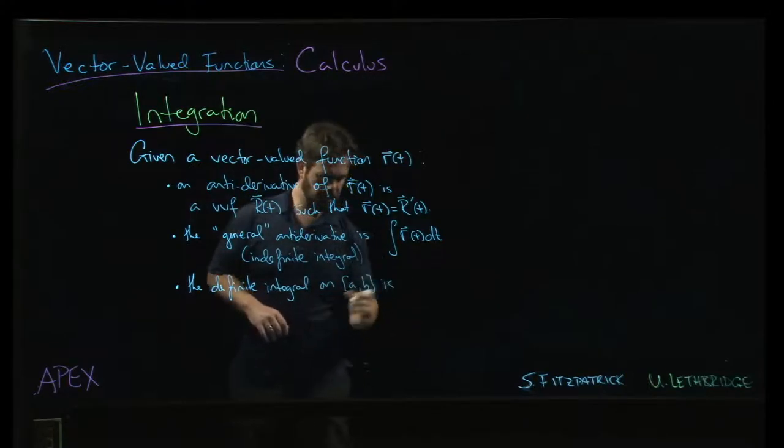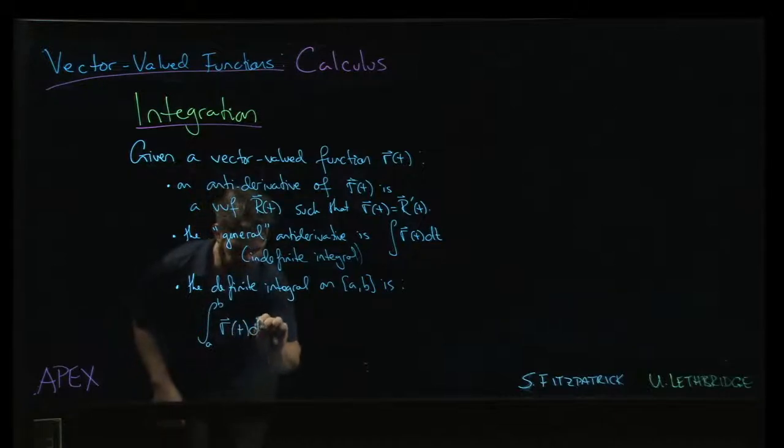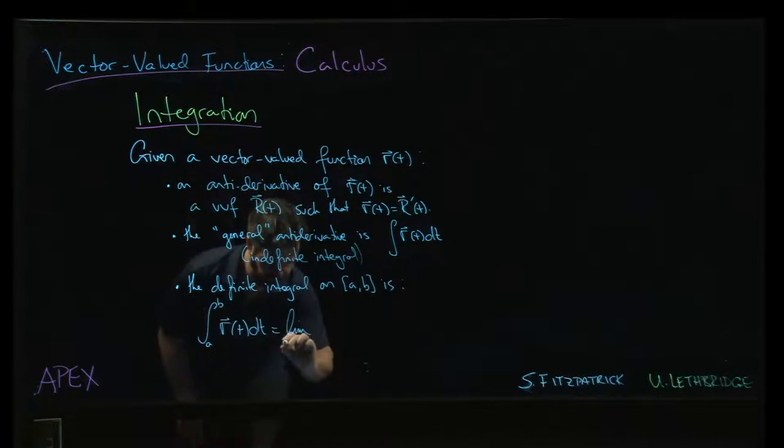So, definite integral on, let's say, ab is going to be given by... Well, we want to think in terms of a definition. So, the integral from a to b of r of t dt will be the limit as, say,